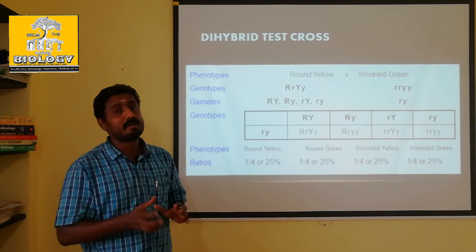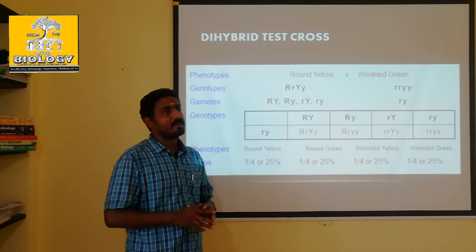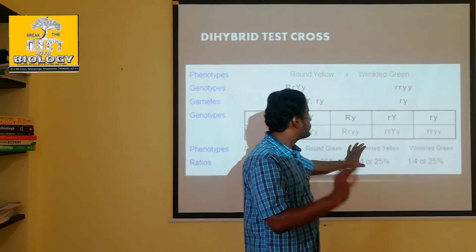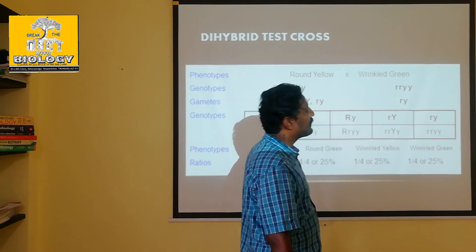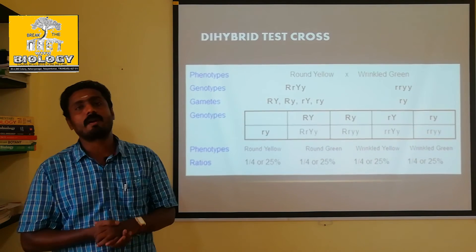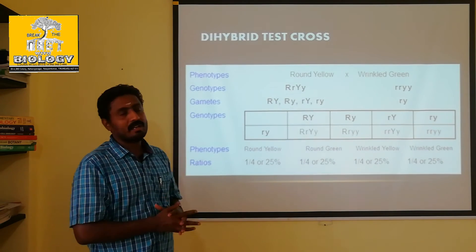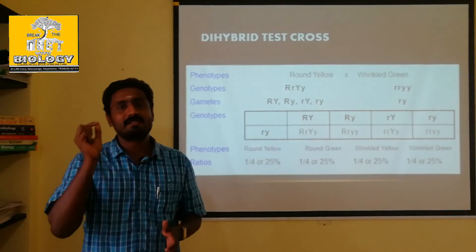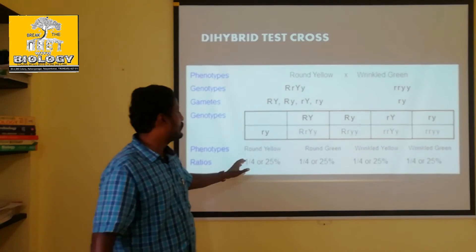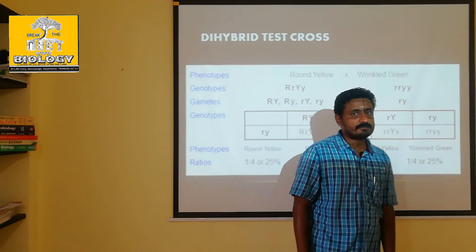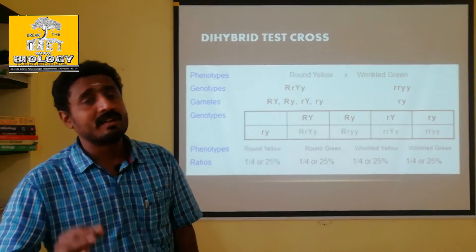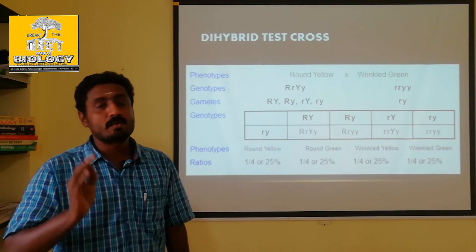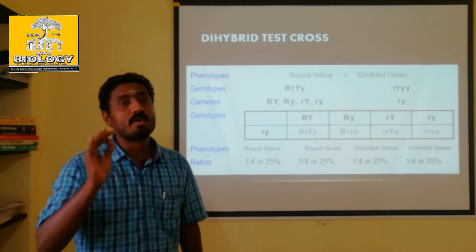If you look at heterozygous dominant and 100 plants: 25 plants are round yellow, 25 plants are round green, 25 plants are wrinkled yellow, and 25 plants are wrinkled green. That is dihybrid cross. So the ratio is 1 to 1 to 1 to 1. If you look at the law of independent assortment in the dihybrid test cross, the result is 1 to 1 to 1 to 1.